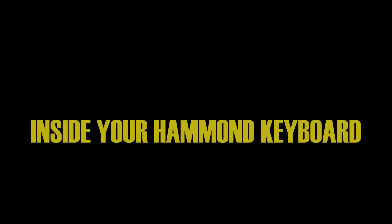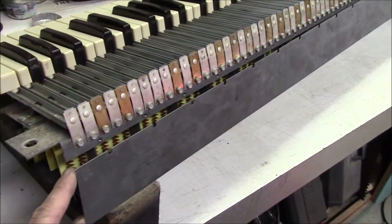We're going to take a look inside your Hammond keyboard. Underneath this sheet metal cover is the back end of the keyboard contacts.